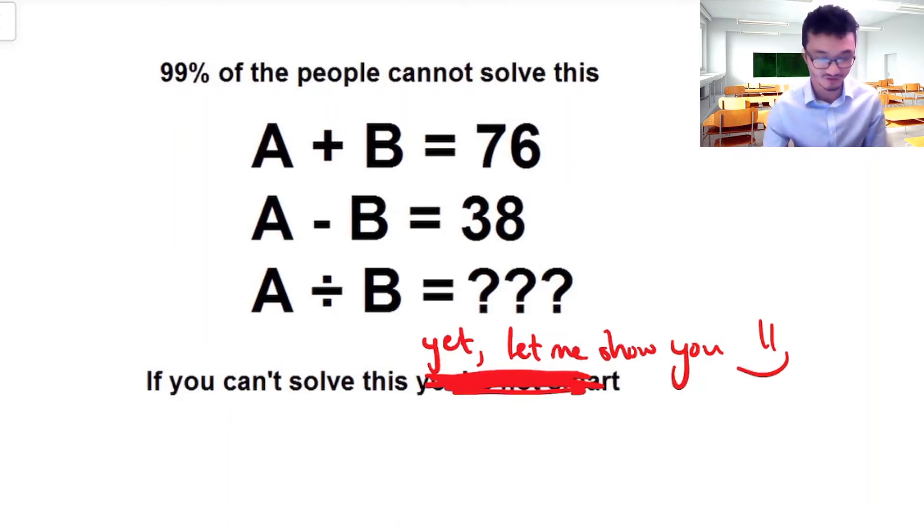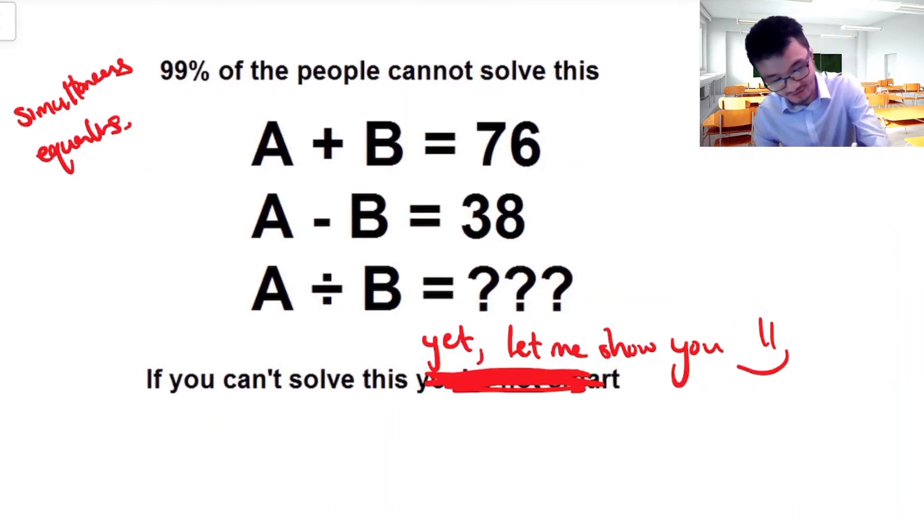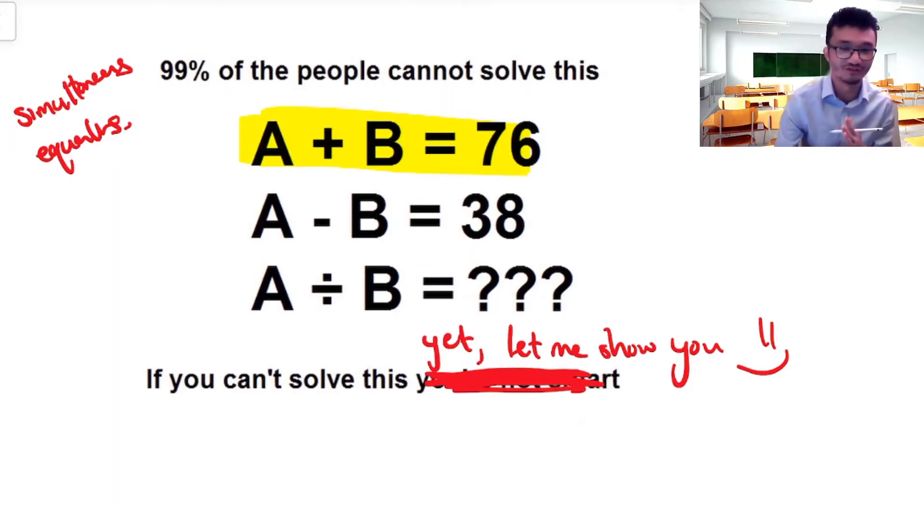So this is a skill in algebra that we talk about called simultaneous equations. So the idea is that we have these conditions which are applied to certain letters or variables. And we basically want to work out what they are. Let me look at the first equation. Because the issue with this question is basically if I only look at one of the equations, there's actually infinite possibilities for it.